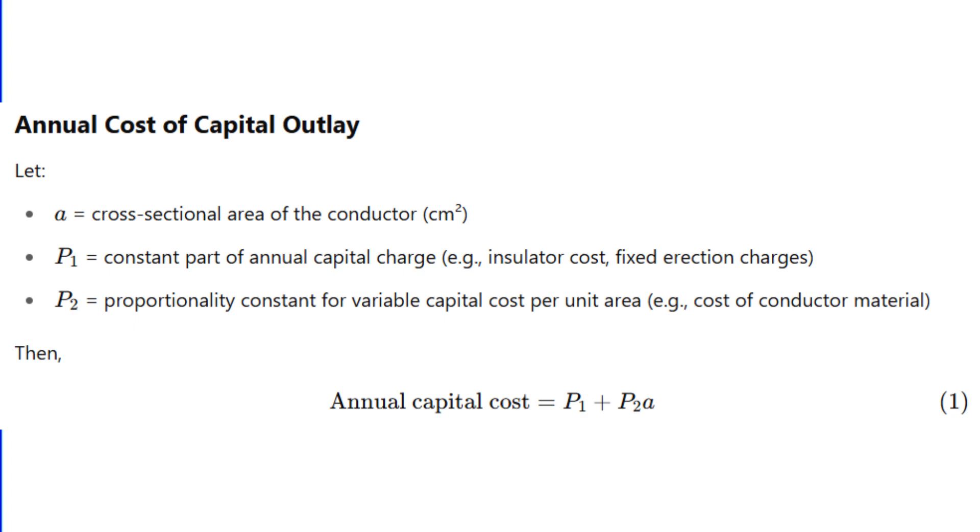Then there's the cost that does depend on the conductor size, such as the conductor material itself and the part of support structure related to its weight. This is the variable part, and it's represented by P2 times A, where A is the cross-sectional area of the conductor. So the total capital related cost per year becomes P1 plus P2A.